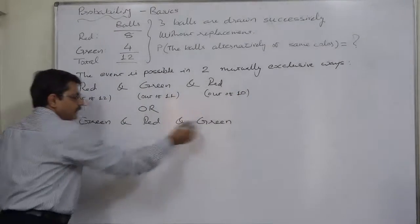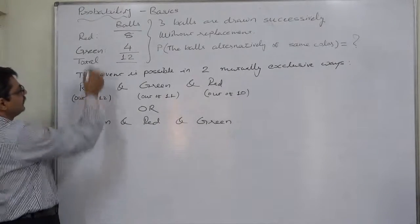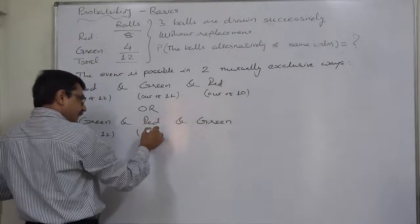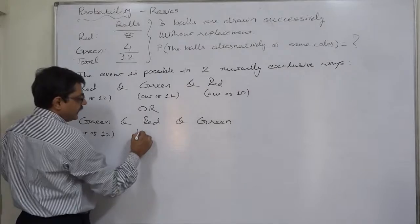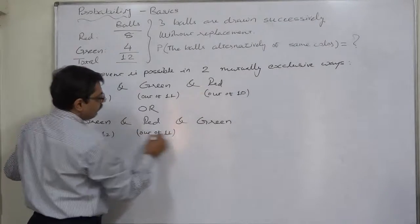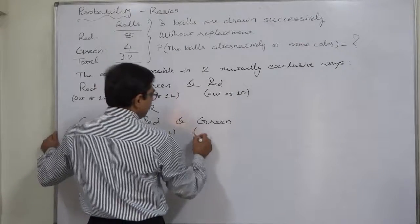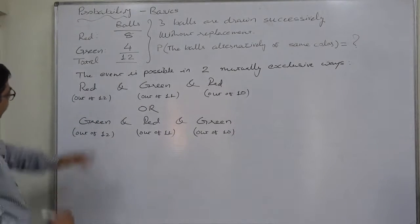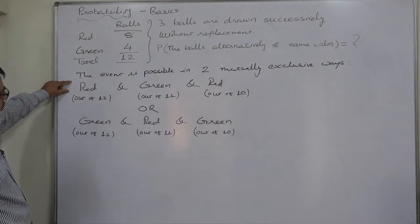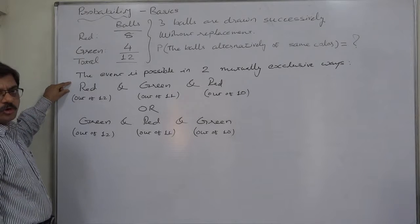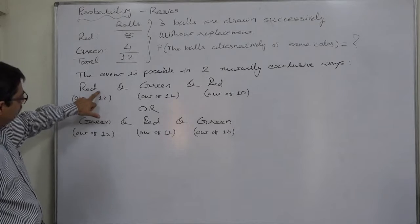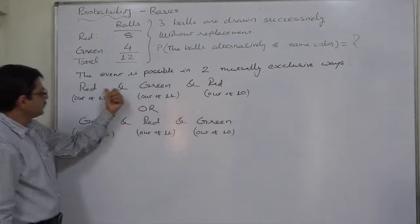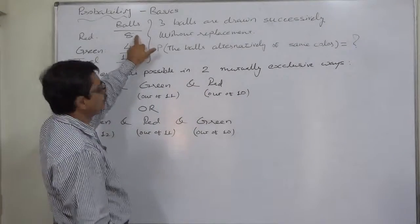Similarly, if the event happens the second way — Green-Red-Green — the first green is drawn from 4 out of 12. The second draw is red from 8 out of 11, since the first ball was not replaced. Now, for the third draw, since we already drew one red, the red count reduces from 8 to 7.